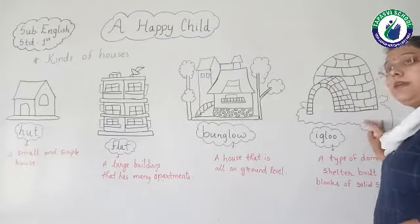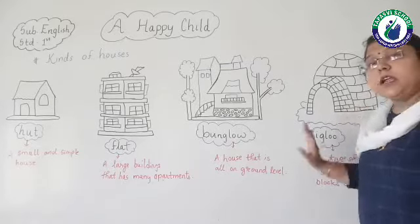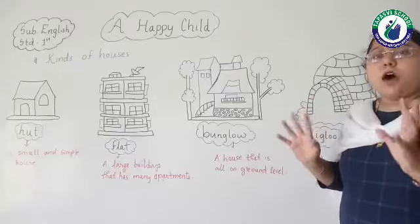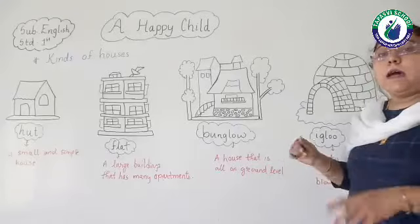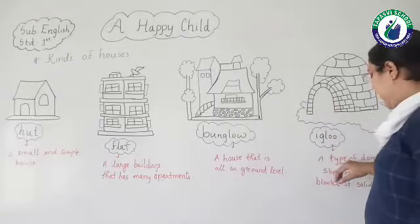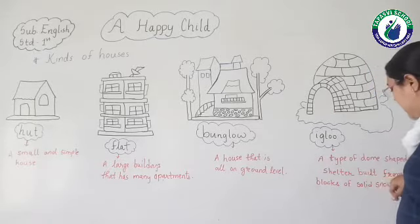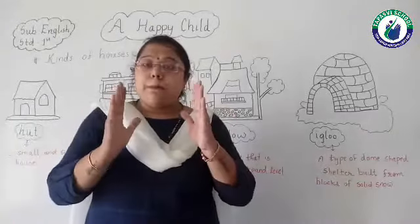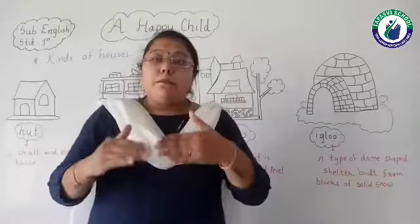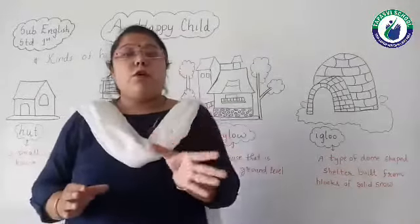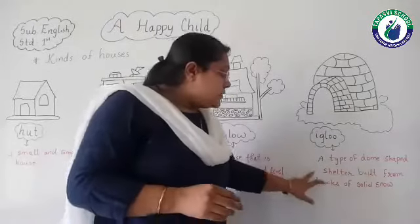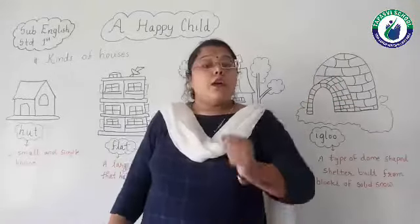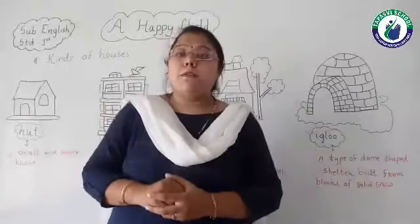Have you seen an igloo? We have not seen one. Why? Because igloos are generally found in very cold areas. Those people living in cold areas where there is a lot of snow — you can see igloos there. An igloo is a type of dome-shaped shelter built from blocks of solid snow. Just like buildings use bricks, they use blocks of solid snow to make igloos.